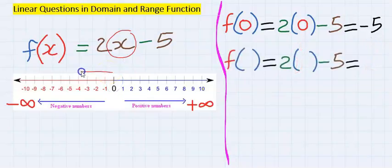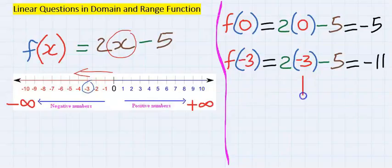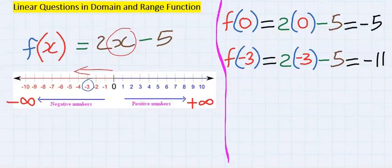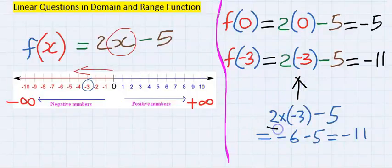Let's move towards negative infinity and choose an integer — let's consider minus three. You can choose any other number. With the domain as minus three, the range will become minus eleven.